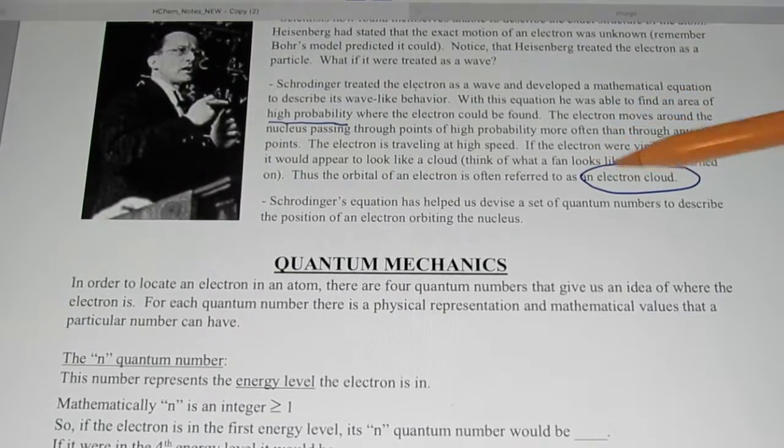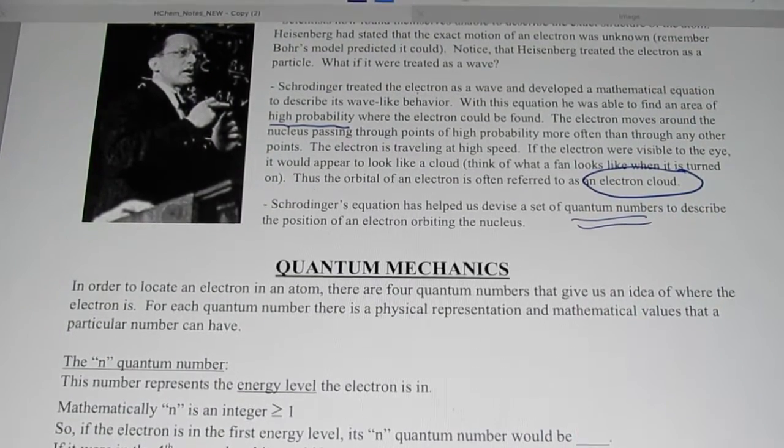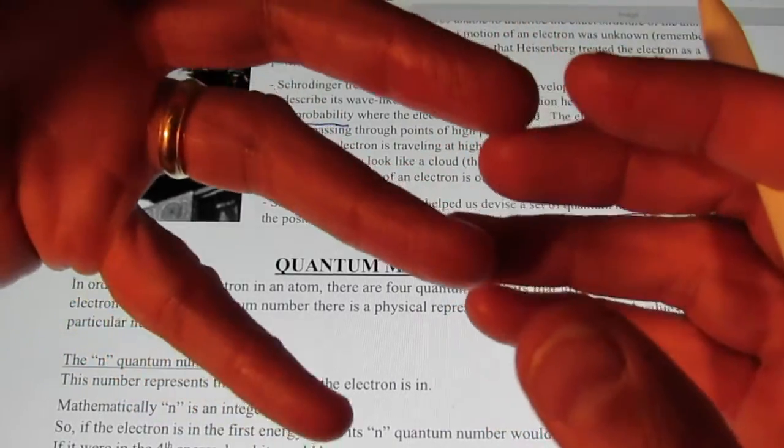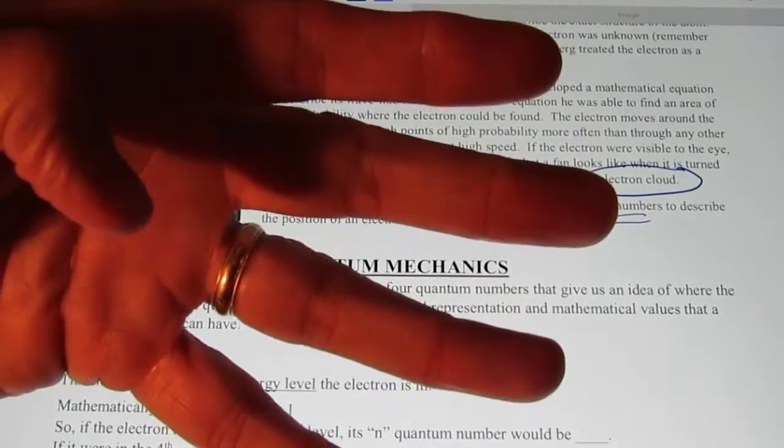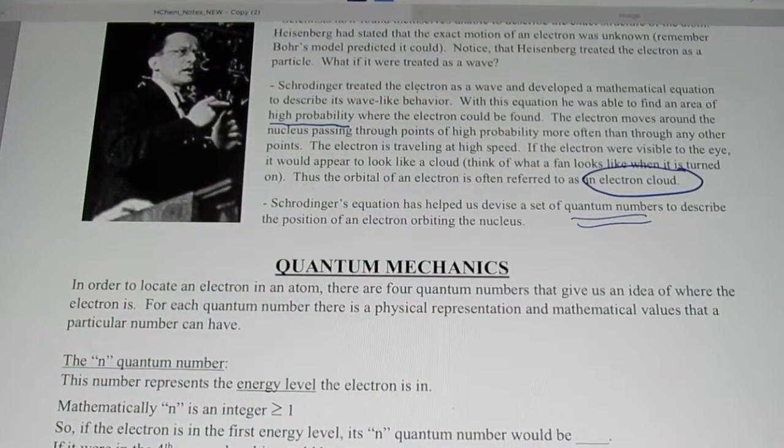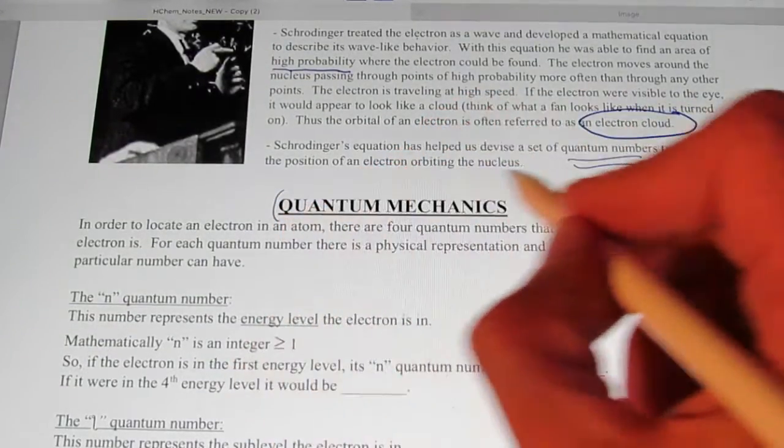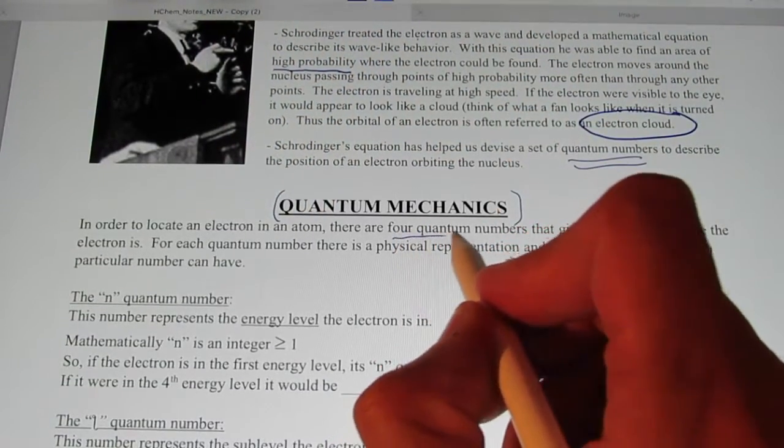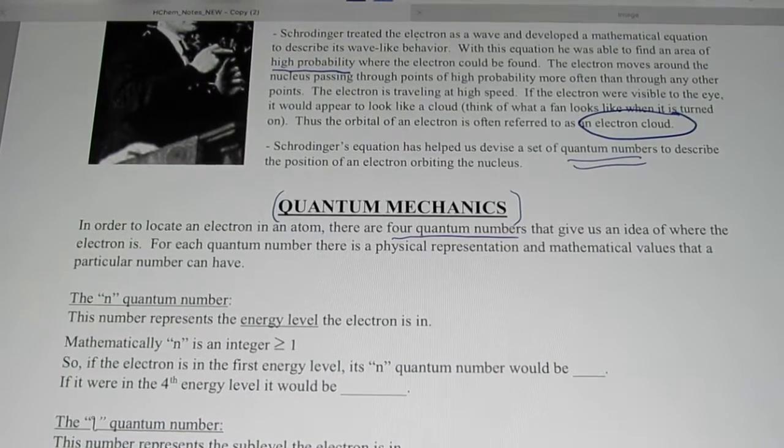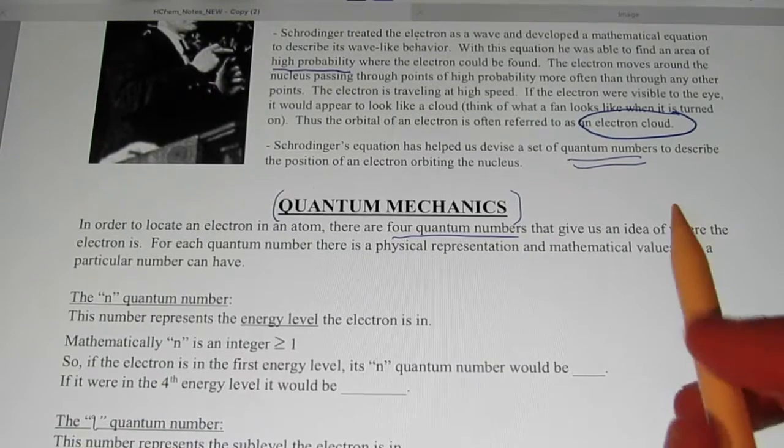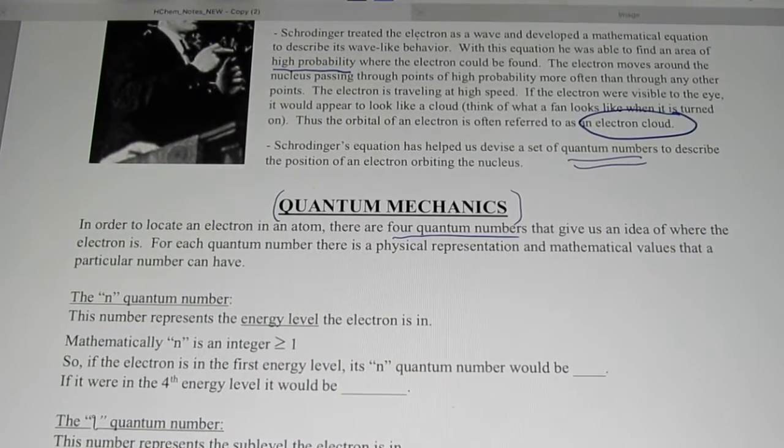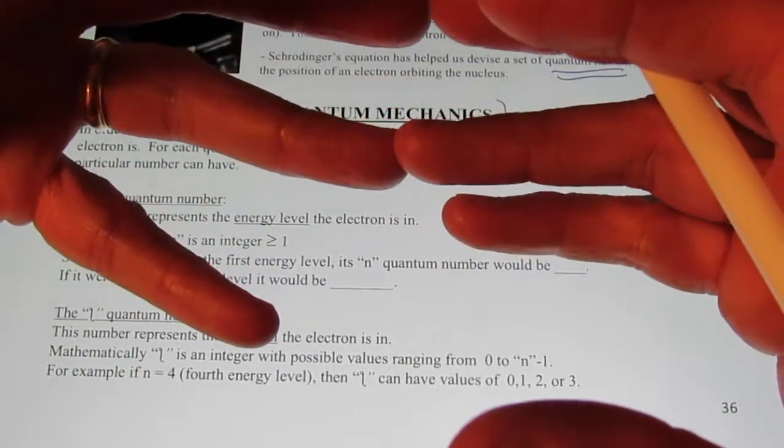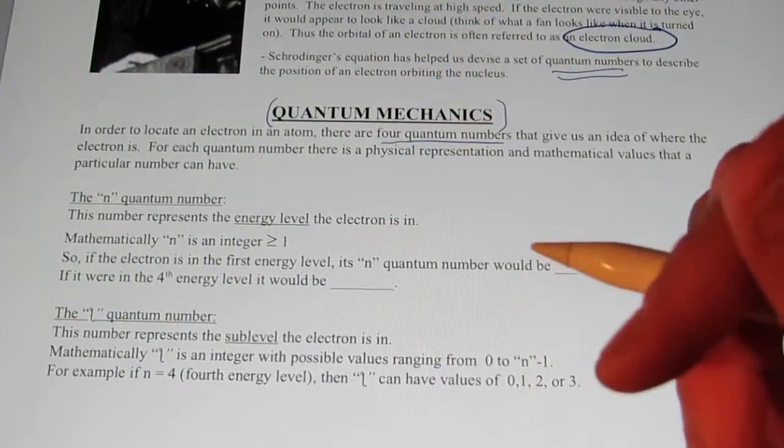Schrödinger's equation has helped us devise a set of quantum numbers to describe the position of an electron orbiting around the nucleus. So the set of quantum numbers we are going to view as like an address for the electron. There are a set of four numbers that we are going to become familiar with. So here we go. This takes us into a field called quantum mechanics. In order to locate an electron and an atom, there are four numbers that give us an idea of where the electron is.